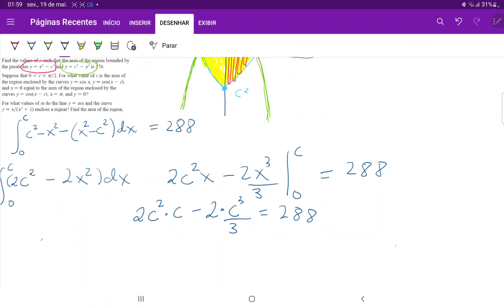So now we have that 2c³ - 2c³/3 = 288. So therefore, we have that, let's see, let's plug this into our calculator. So, and then we have that 144 divided by 2/3. So we have that c³ = 216.